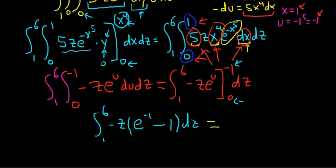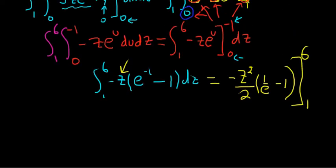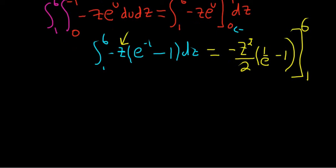So now we integrate with respect to z. Everything else is a constant here. So when we integrate z, we simply get z squared over 2. So this is negative z squared over 2. And we have the 1 over e minus 1. And we're going from 1 to 6. So this is equal to.